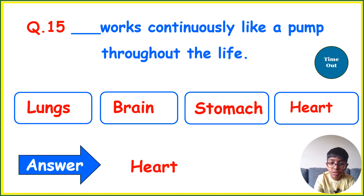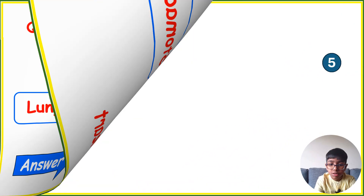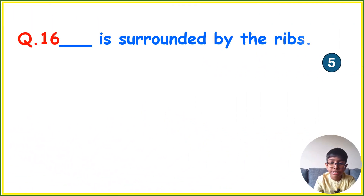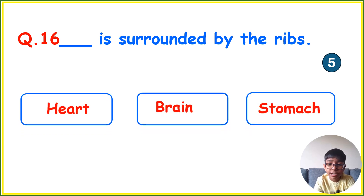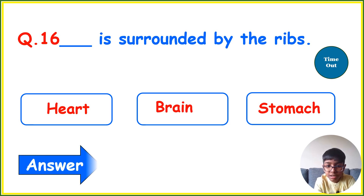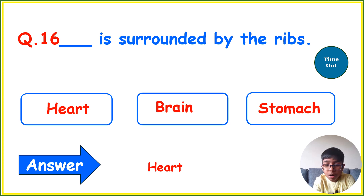Your next question is: Dash is surrounded by the ribs. Options: Heart, Brain, or Stomach? Your time starts now. Your correct answer is Heart.